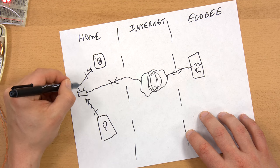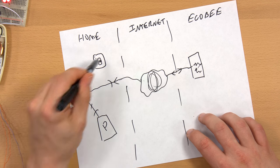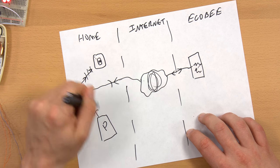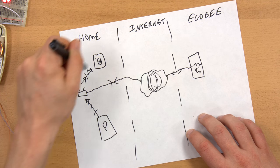So every time you communicate with the Ecobee, even if you're in the house with it, it's going out over the internet to Ecobee's server and then back to your Ecobee.